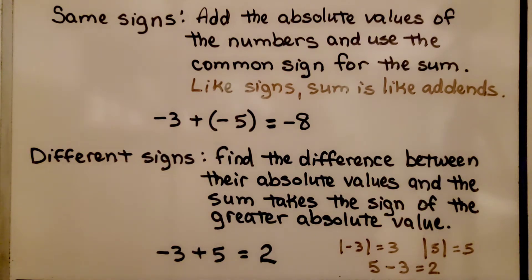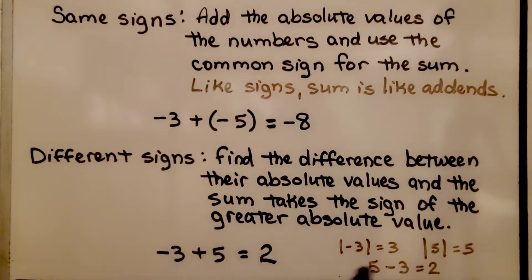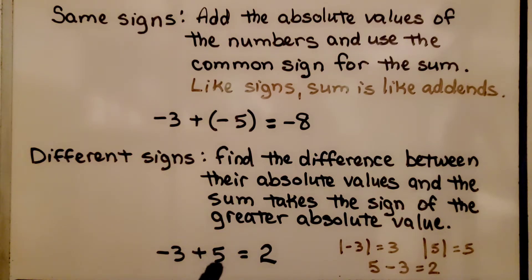For different signs, we find the difference between their absolute values, and the sum takes the sign of the greater absolute value. So if we have negative 3 plus positive 5, we find the difference between 3 and 5 — that's 2. Which one is farther from 0? Well, 5 is, and it's positive, so we have a positive 2.